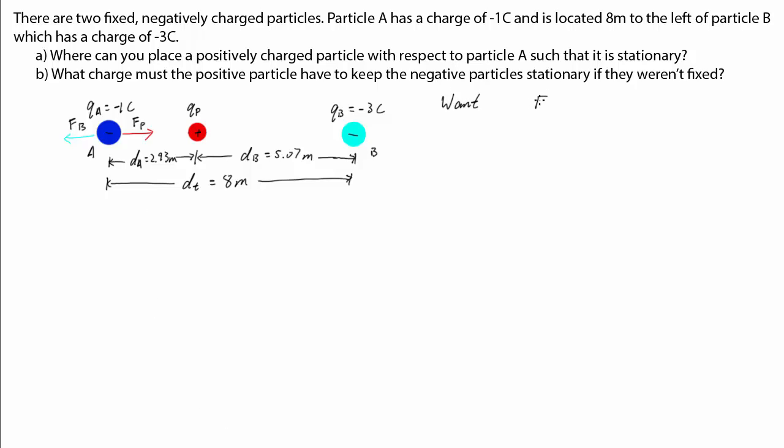Now we want FB to equal FP. That way A experiences no net force and thus remains stationary. The distance between particle A and the positive particle is smaller than the distance between particle A and particle B. In other words, dA is smaller than dt. So for the forces A experiences from these particles individually to be the same, then particle B must have a bigger charge than the positive particle to compensate for the differences in distance.